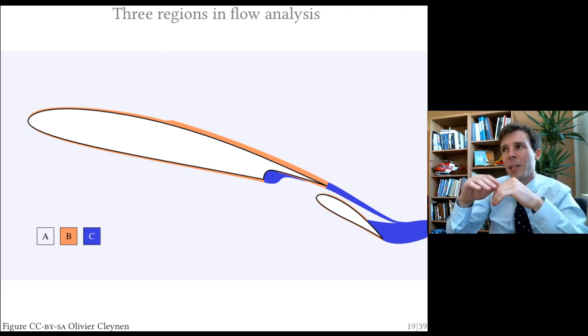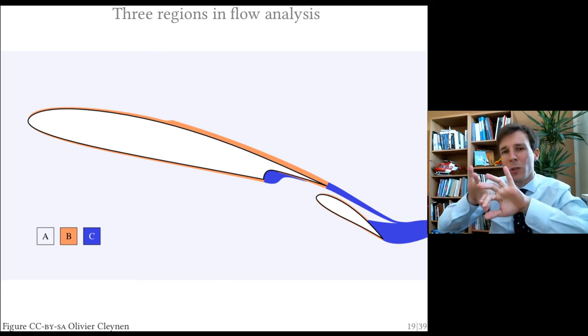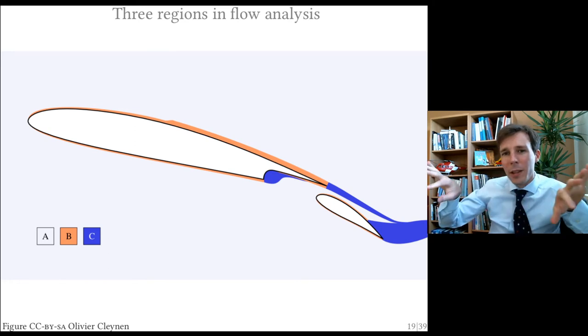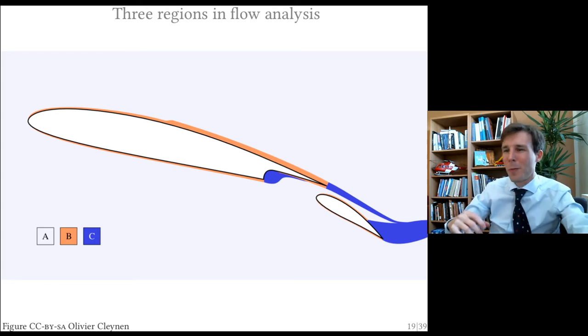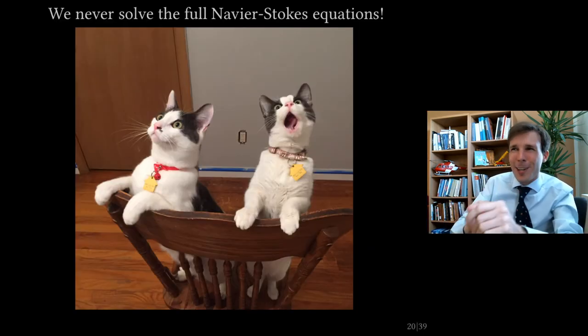So the idea is this. The boundary layer is kind of an area which allows you to split the problems and separate problems and reduce your computational time. So this is the deal. We never solve the full Navier-Stokes equation. Yay, cool.